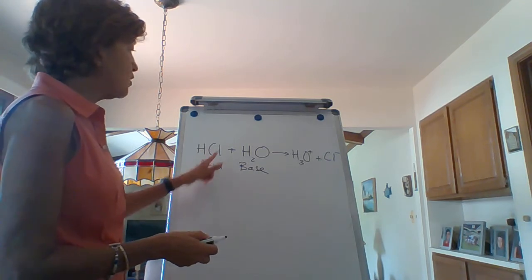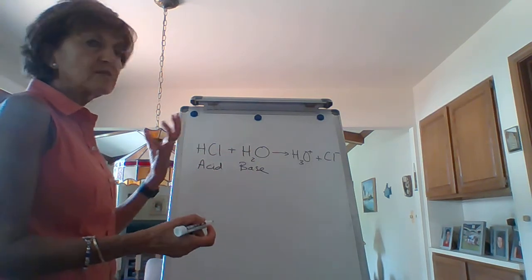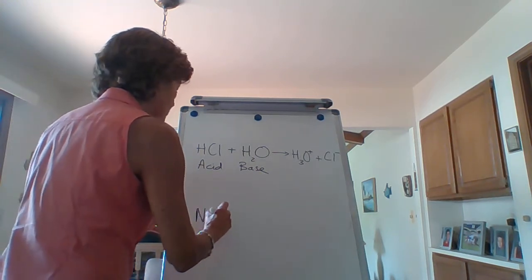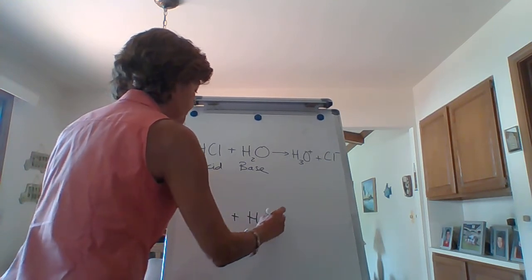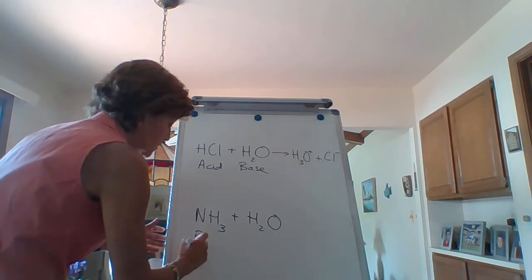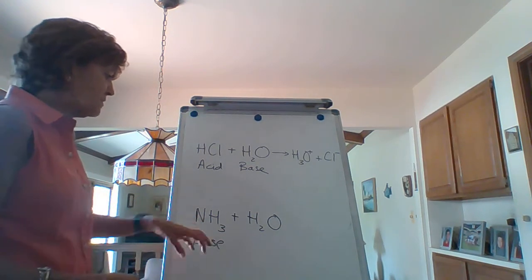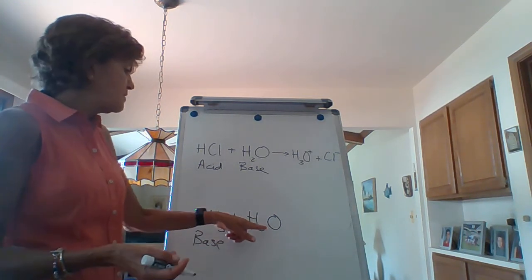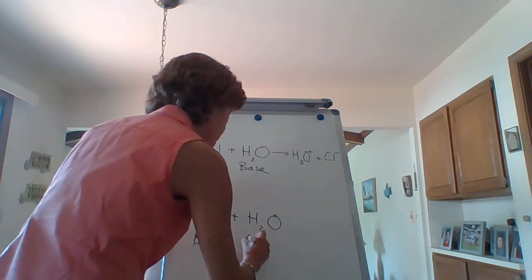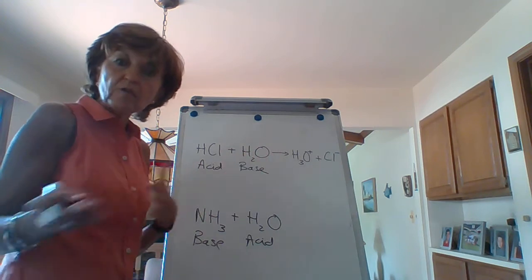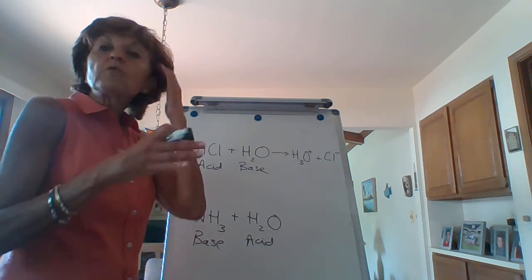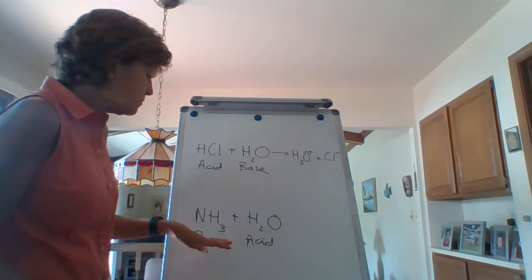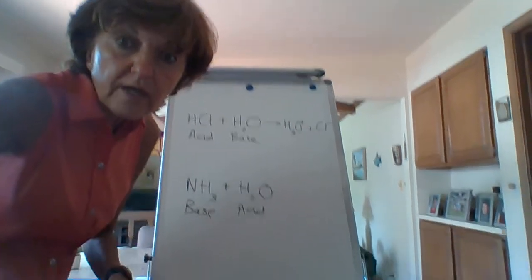An acid is a substance that donates a proton; a base is a substance that accepts a proton. Let's try ammonia now — here's ammonia in water. We want ammonia to be a base, meaning it needs to pick up a proton. The water is going to give it the proton, so water is acting as an acid here. Look — water can do both: it can act as an acid and it can act as a base. We'll talk about the significance of that a little later in the chapter.